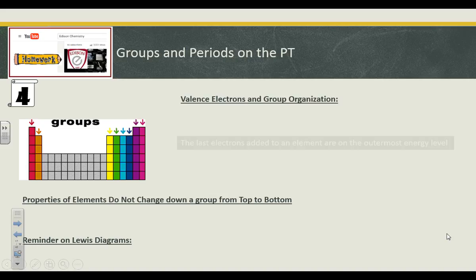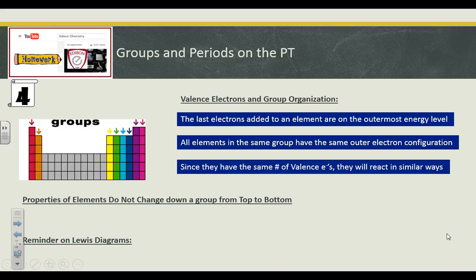Groups, valence electrons and group organization. The last electrons added to an element are on the outermost energy level, which means that all elements in the same group have the same outer electron configuration. If you look at the periodic table's electron configurations, look at the last number in the sequence. Everybody in group 1 and 2, and 13, 14, 15, 16, 17, and 18, follow that rule. The only set of elements that don't is that giant extended family in the middle called the transition elements. Groups 3 through 12 don't always have the same outer electron configuration. But groups 1, 2, and 13 through 18 follow the rule.